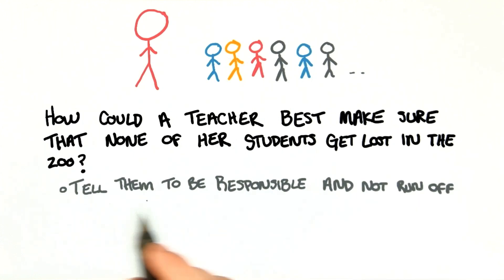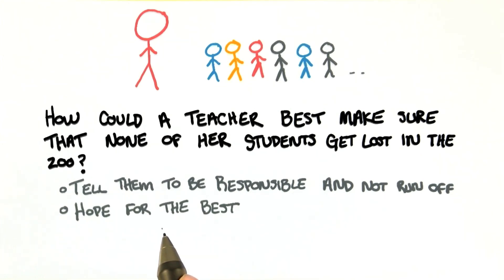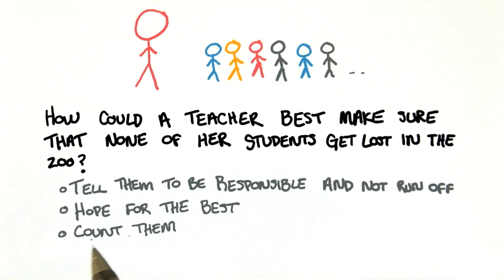Tell them all to be responsible for themselves and not run off. Your second choice is, hope for the best. Your third choice is, count them. Your last choice is, they probably shouldn't go on the trip at all, just to be safe.